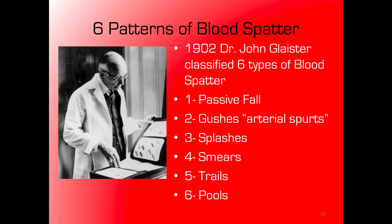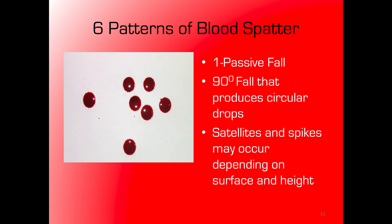Let's get into the six main pattern types. These were developed by Dr. John Glaster, and his work has stood the test of time — around for over a century, put on the books around 1902, and still recognized today. The six types are: passive fall, gush or arterial spurt, splash, smear, trail, and pool. As mentioned before, you're not always going to get just one type — you might have a combination of many patterns on top of each other, especially in a brutal or gruesome scene.